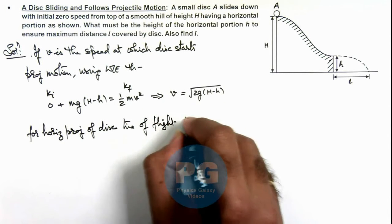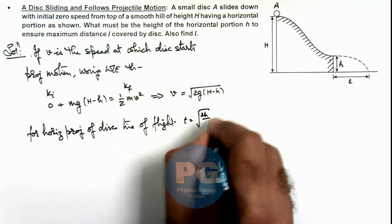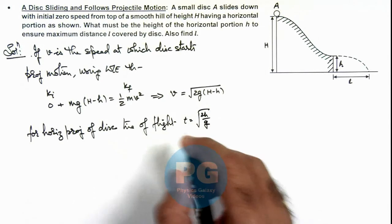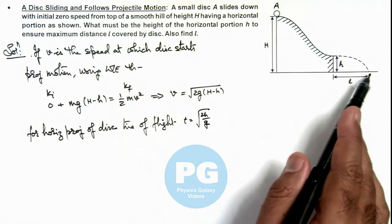t is equal to root of 2h by g. This is the time it will take in reaching ground and we can easily calculate the horizontal range.